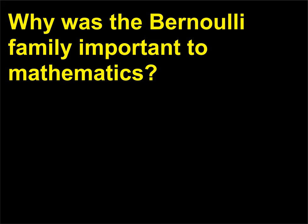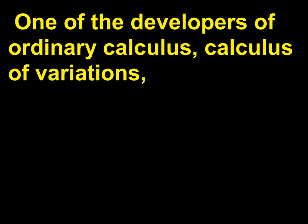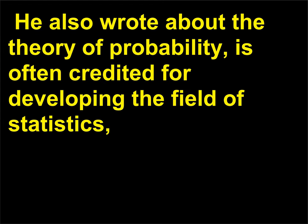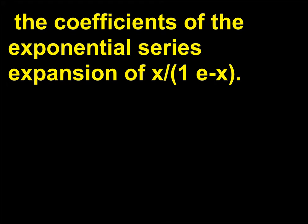Why was the Bernoulli family important to mathematics? The Bernoulli family of the 17th and 18th centuries is synonymous with mathematics and science. One of the developers of ordinary calculus and calculus of variations, and the first to use the word integral, was Jacob Bernoulli (1654–1705), also known as Jacob, Jacques, or James. He wrote about the theory of probability, is often credited for developing the field of statistics, and discovered a series of numbers that bear his name: the coefficients of the exponential series expansion of x⁻¹eˣ.